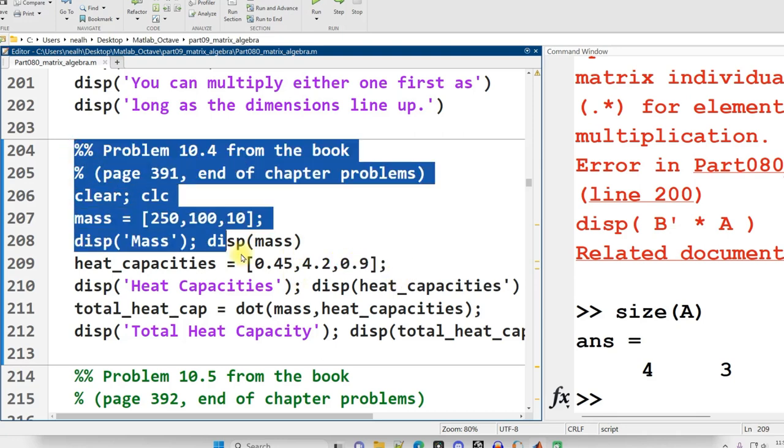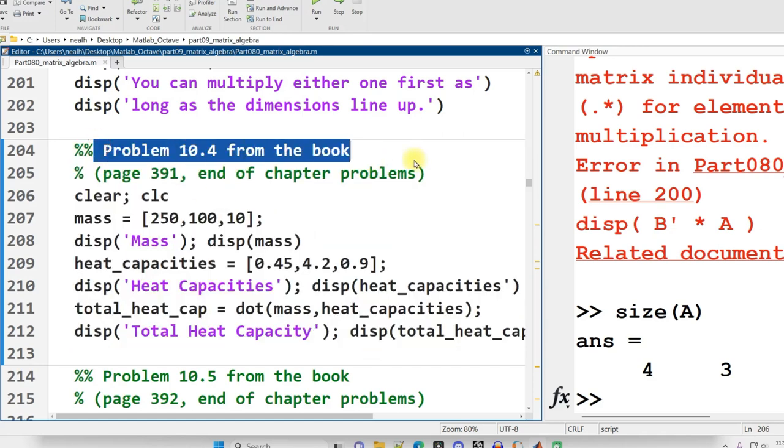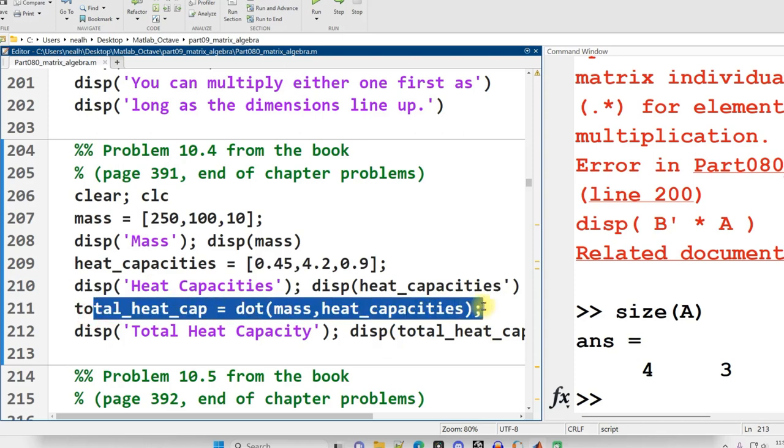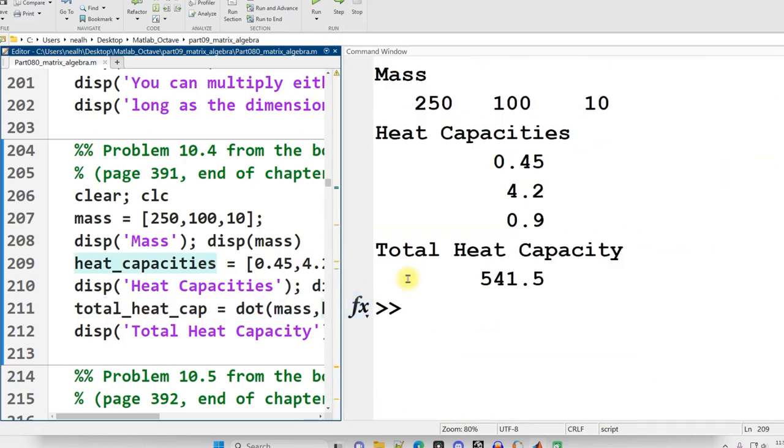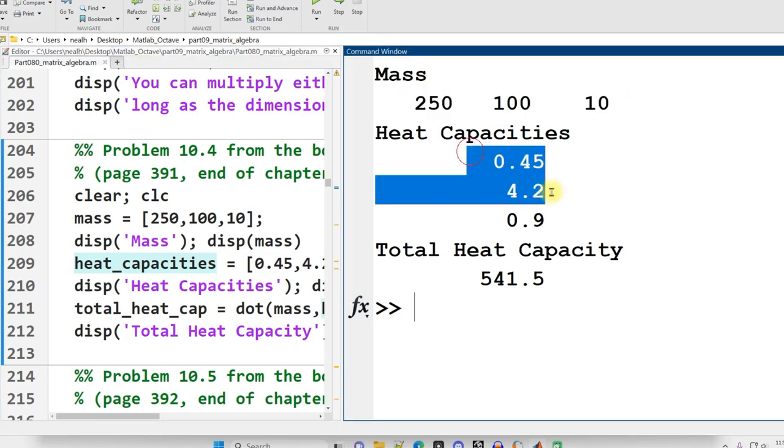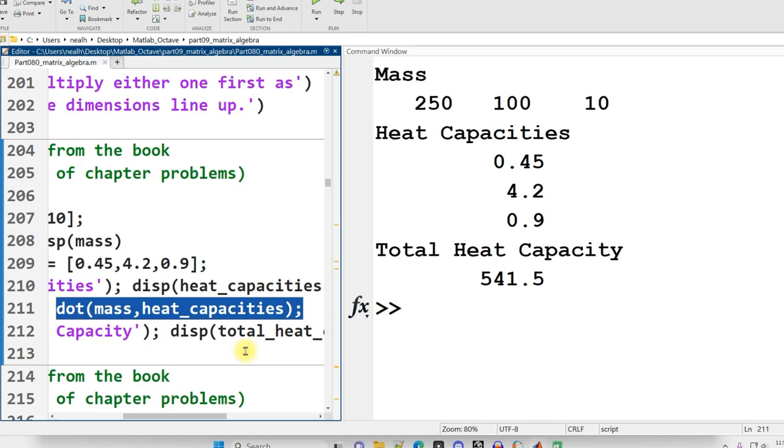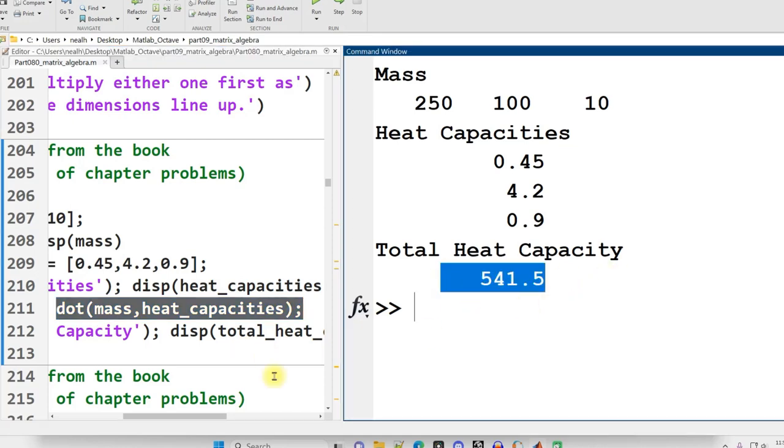The solution to this whole question, which is like an end of chapter question, is literally just all this setup followed by one little dot product. Let me actually run this section here. And there we go. We have these three masses. We have these three heat capacities. We dot product those two vectors and we get our solution. And that's it.